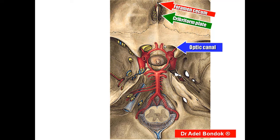This is the optic canal. It transmits the optic nerve and the ophthalmic artery. The ophthalmic artery is a branch from the internal carotid artery.